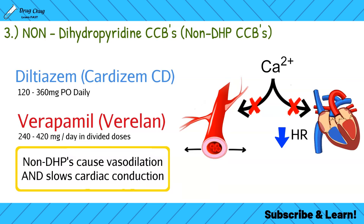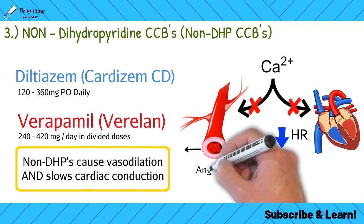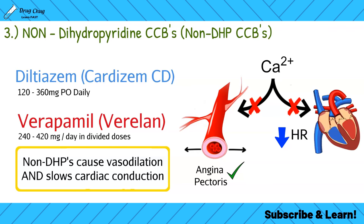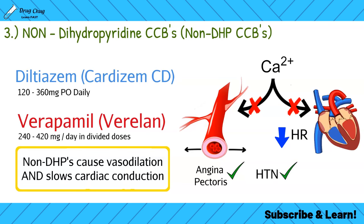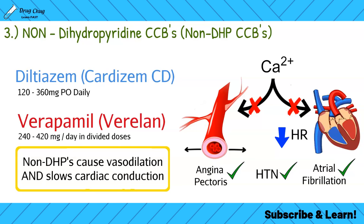Non-DHP calcium channel blockers are used for angina pectoris — relaxing vasculature so the heart doesn't work as hard. They're also used for hypertension, since they dilate blood vessels and lower heart rate. Lastly, for atrial fibrillation — where the atria are overactive — non-DHP calcium channel blockers slow down and relax the conduction of the atria.